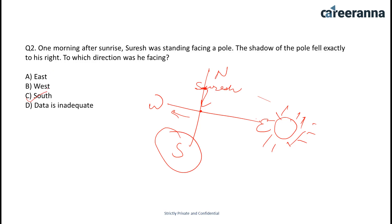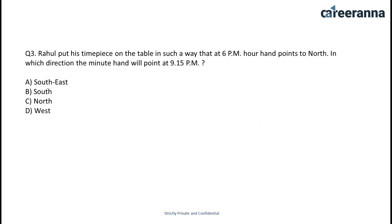The next question is: Raoul put his timepiece on the table in such a way that at 6 p.m. the hour hand points to north. In which direction will the minute hand point at 9:15 p.m.?